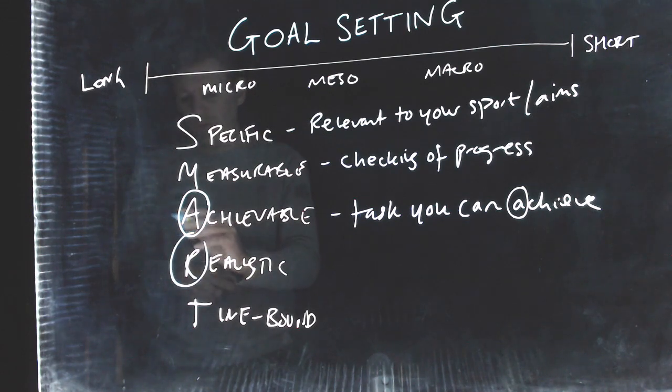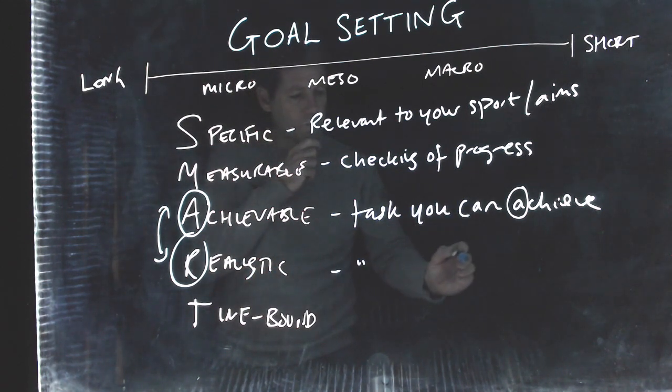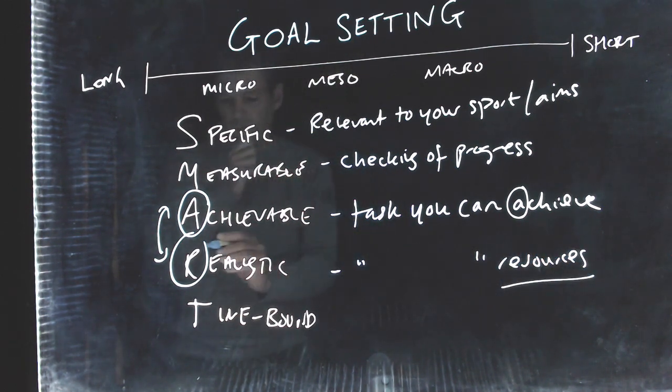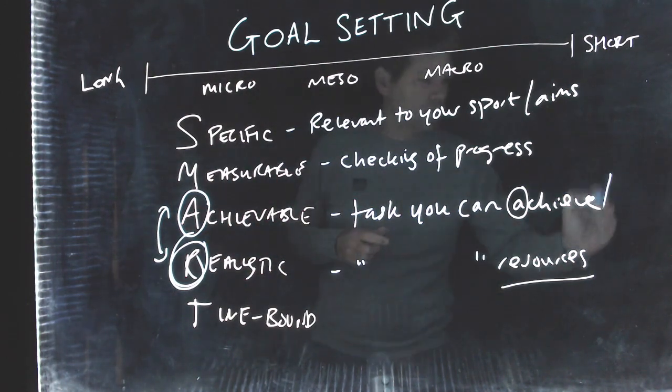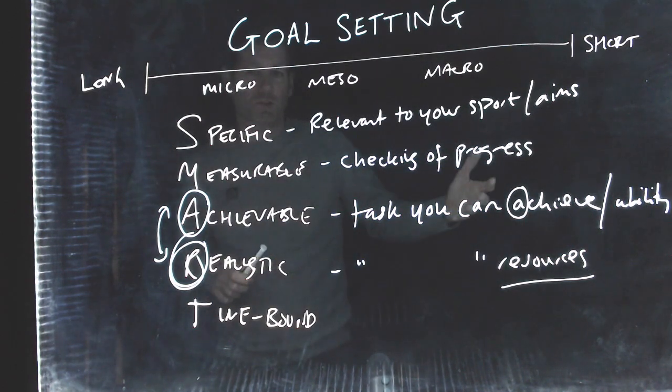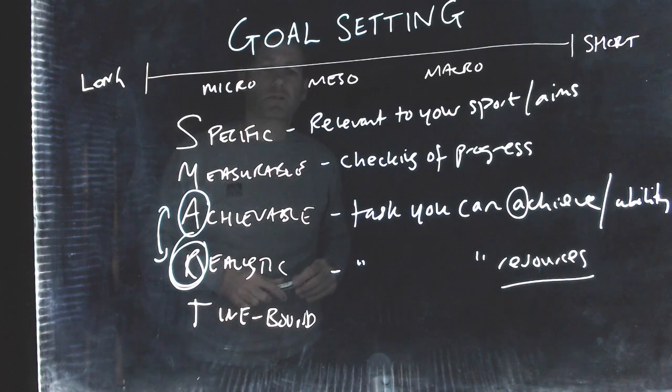And students often get confused between achievable and realistic because they kind of sound the same on the surface of things. However, this is the same. It's a task that you have the resources to be able. It's a task you have the resources. So R for realistic, R for resources. So achievable is yes, you can achieve it. You have the ability to do so. So you have the ability. Whereas realistic is, do you have the resources? You know, do you have access to a swimming pool five days a week? Do you have transport to be able to get to those events to hit the goals that you're setting yourself? Do you have a coach that's in your corner that's trying to work with you to get better? So that's the difference between achievable and realistic.